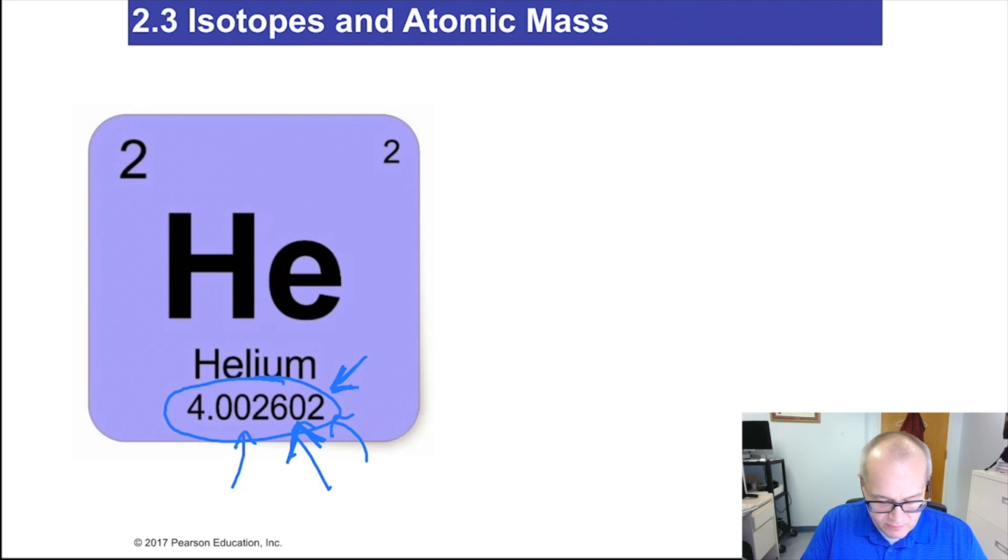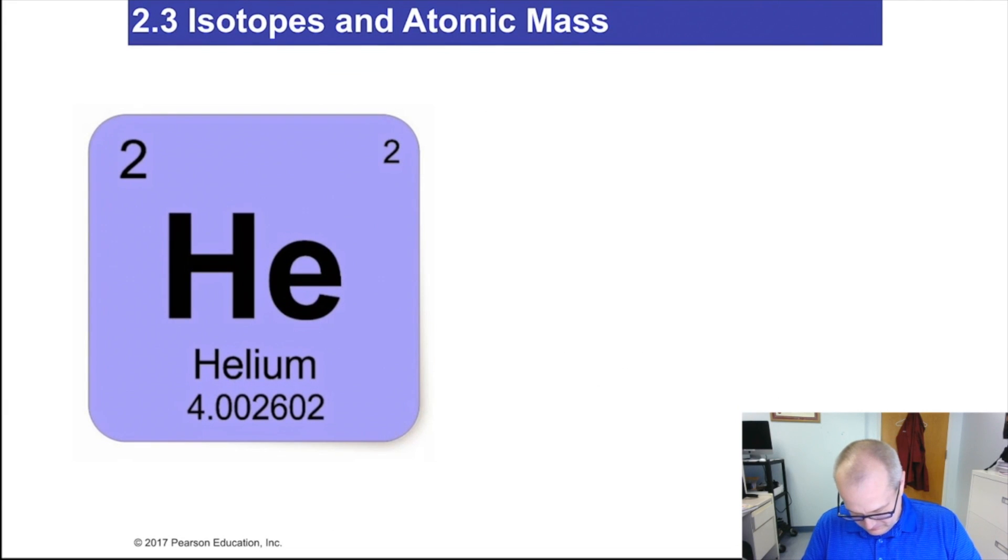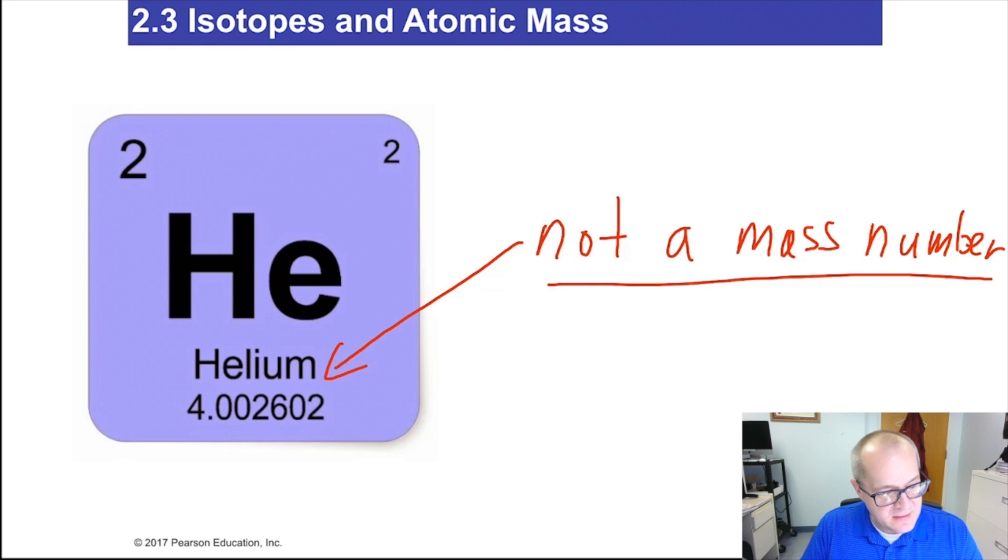It's located below the atomic symbol in every square of the periodic table. And it is generally not a whole number. This is not a mass number. Let me make this very clear. Not a mass number. Very common mistake. People call that a mass number. It's an atomic mass. It's the average mass of an atom in an element. So there you go, there's section 2.3. I believe that's the end of chapter 2, a very short chapter. Make sure you understand it. It's very fundamental stuff. Even though the chapter is short, it's extraordinarily important. And with that, I wish you good luck and good chemistry.